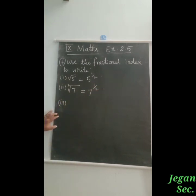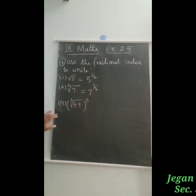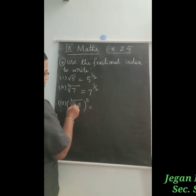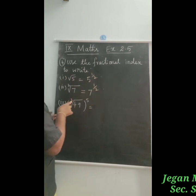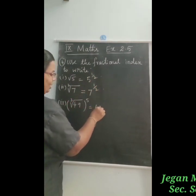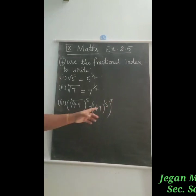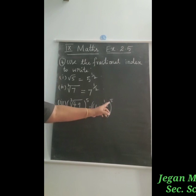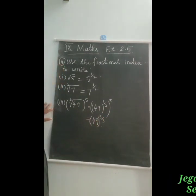The third part is cubic root of 49, the whole power 5. This involves a cubic root, so the root becomes a power of 1 by 3. So cubic root of 49 equals 49 power 1 by 3. Then raising to the power 5, we have 49 power 1 by 3, the whole power 5. Multiplying the two powers gives 1 by 3 into 5, which equals 5 by 3. So the answer is 49 the whole power 5 by 3.